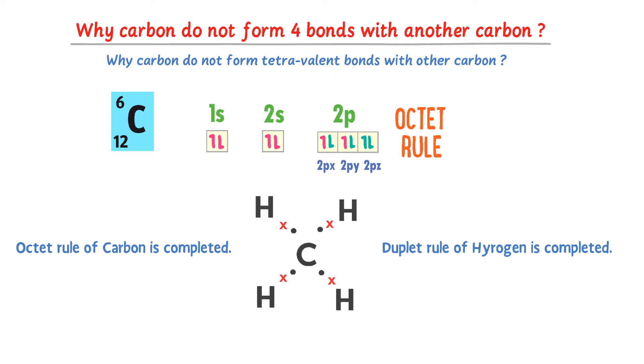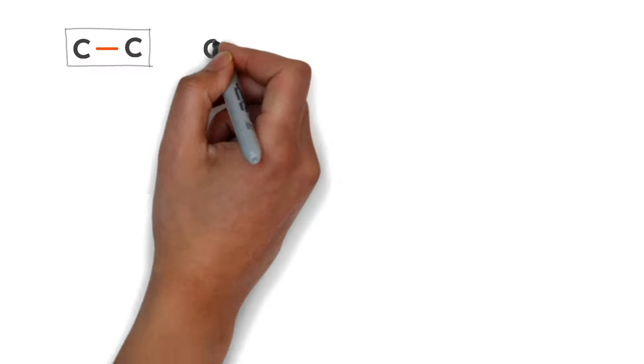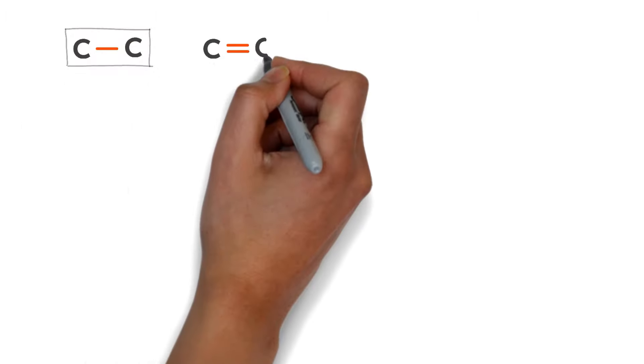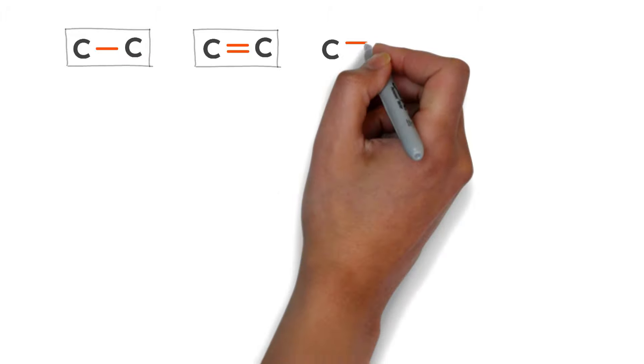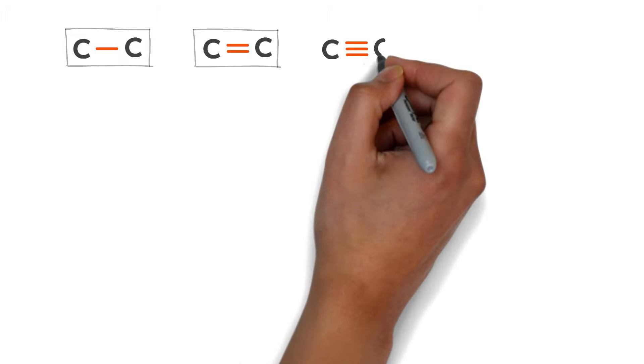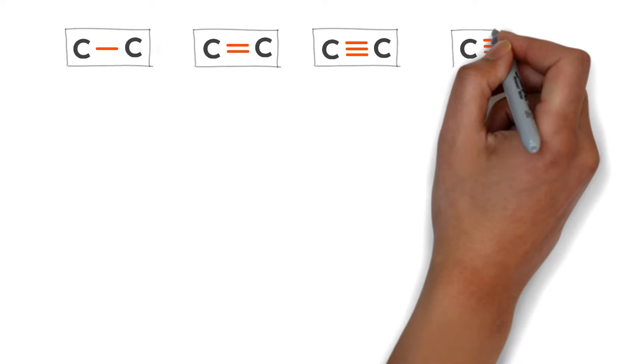In organic chemistry, carbon can form a single bond with another carbon atom, a double bond with another carbon atom, and a triple bond with another carbon atom. But why can carbon not form four bonds with another carbon atom?